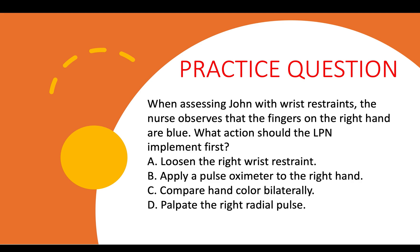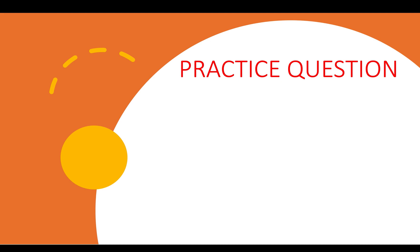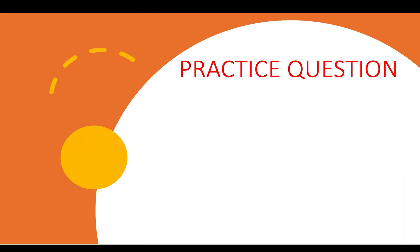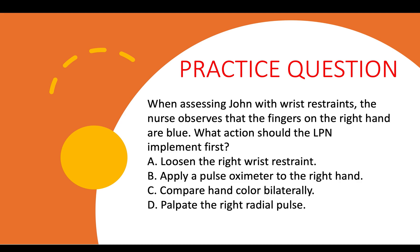Using the ABCs S&D tip: does this question talk about airway? No. Breathing? No. Circulation? Yes — John has wrist restraints and the fingers on the right hand are blue, so this is clearly a circulation problem. We need an answer that fixes the circulation problem. You should have chosen A) Loosen the right wrist restraint. This is how ABCs S&D helps you prioritize and recognize the correct answer.